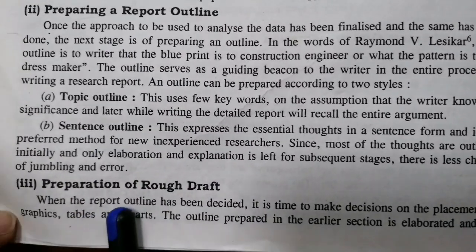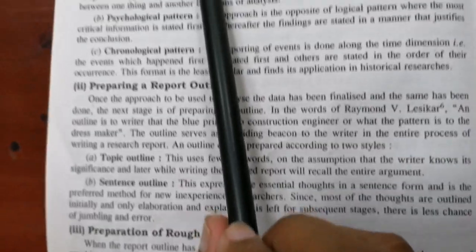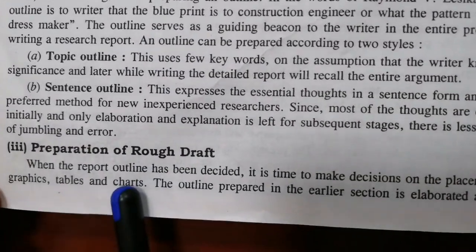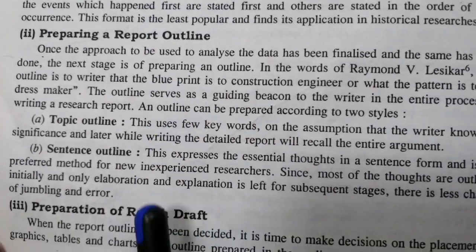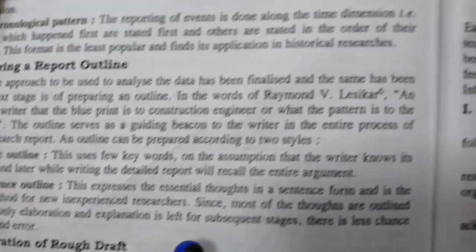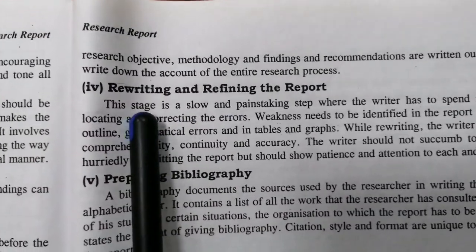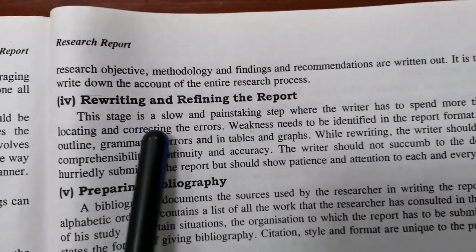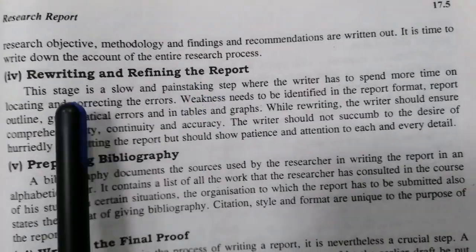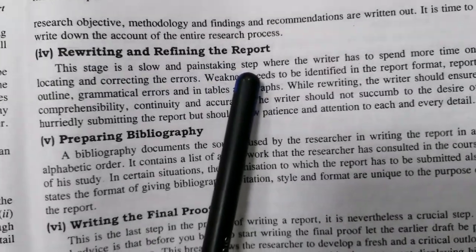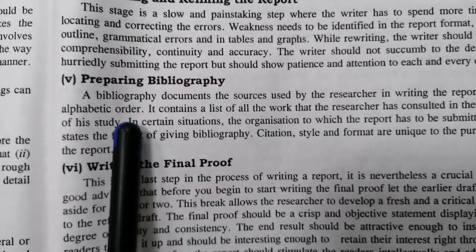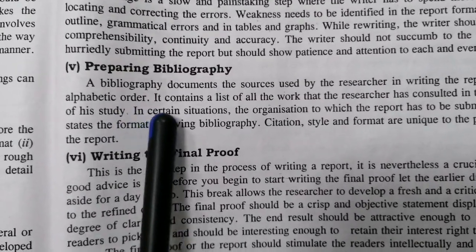The next step is preparation of a rough draft. The steps so far are: Deciding on Report Format, Preparing Report Outline, and Preparation of Rough Draft. In this step, we do rough work in the process, then we rewrite and refine the report. After refining, we prepare the bibliography, where we mention all the sources of the report.